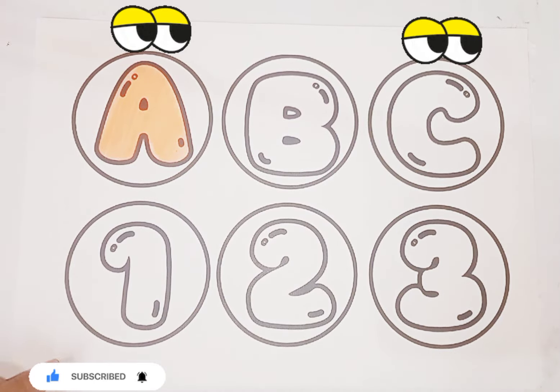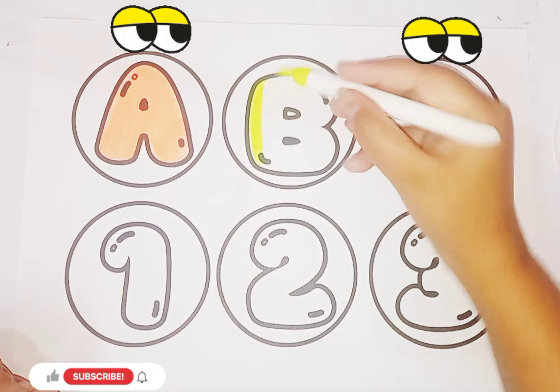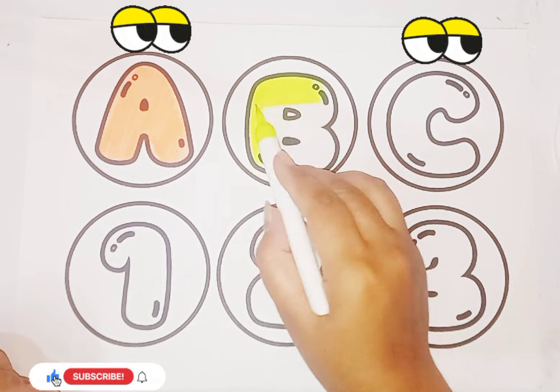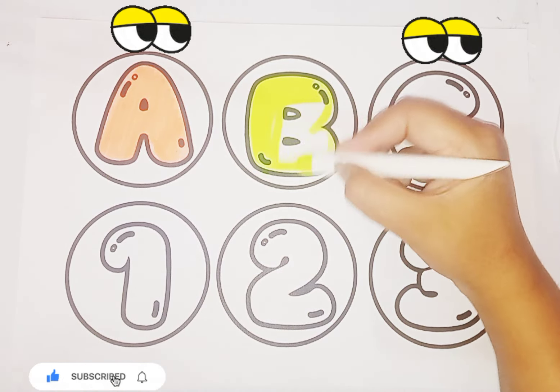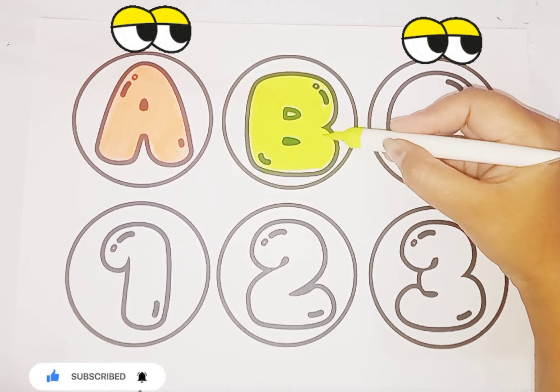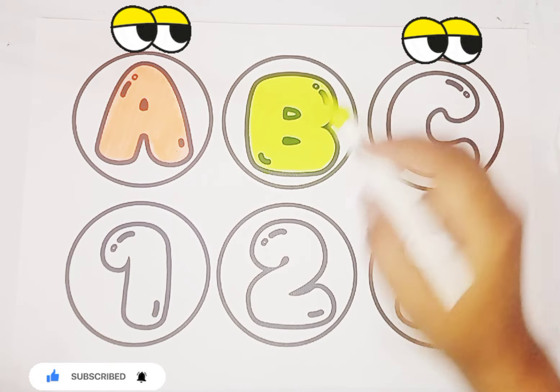Next we use parrot yellow color. Alphabet B. B is for banana. B is for butterfly. Alphabet B.